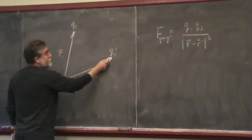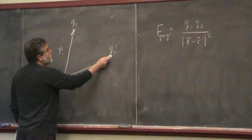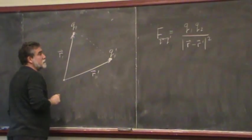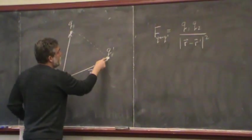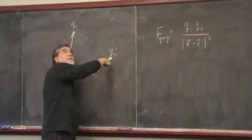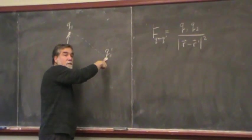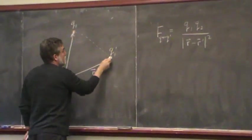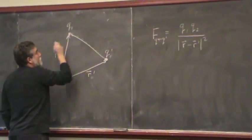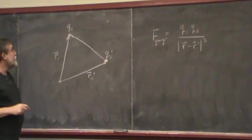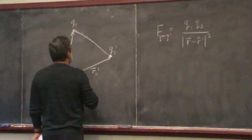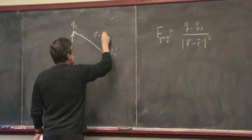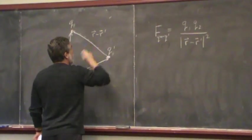What I'm going to do is take the direction vector between these two. The direction vector goes from the charge that's going to exert the force to the charge that we're measuring the force on. So I've got a vector which goes like so, and that vector is r minus r prime.